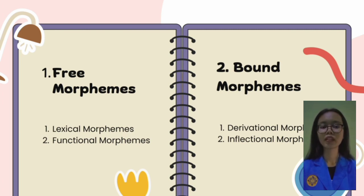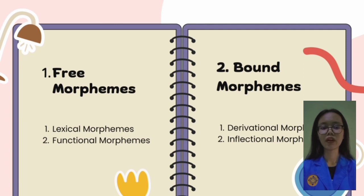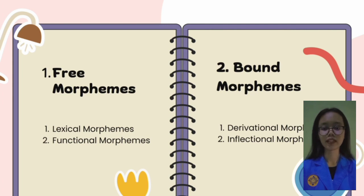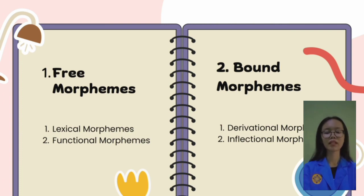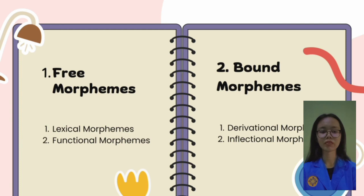The first is lexical morpheme. Lexical morphemes are morphemes that can stand alone and can convey the content or meaning we convey, divided into three types: verb, noun, and adjective. For example, 'run' is a verb, 'baby' is a noun, and 'cool' is an adjective.